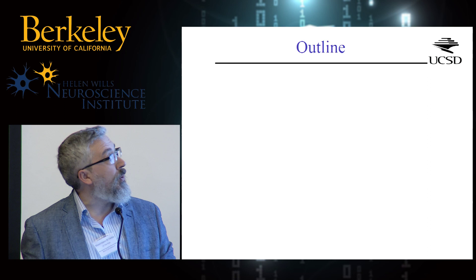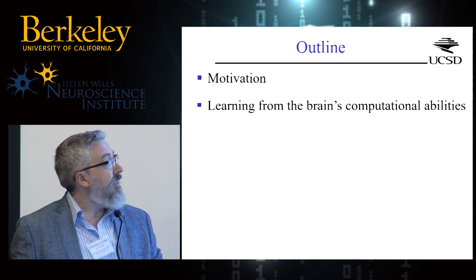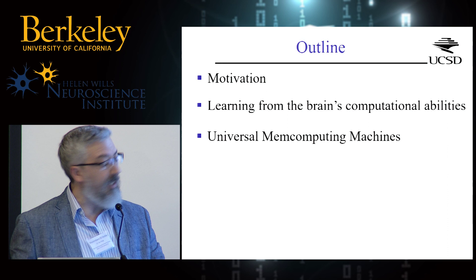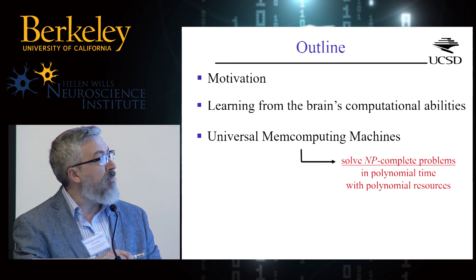Let me quickly go through the motivation — this is a crowd that probably doesn't need much motivation. Then I will tell you what we try to learn from the brain's computational ability, which will lead me to a new computing paradigm we call universal mem computing machines. I'm a theoretical physicist, not a computer scientist or engineer. But we can prove mathematically that these machines, if they can be built in practice, can solve very complex problems like NP-complete problems in polynomial time with polynomial resources. We have an actual mathematical demonstration of this.